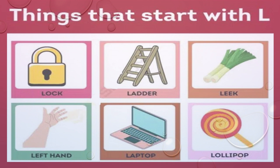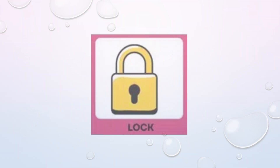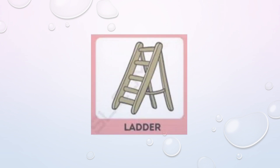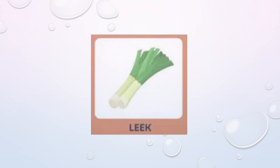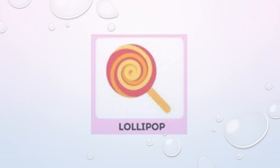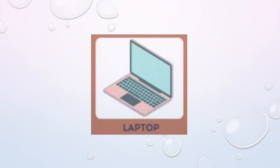Check up. English vocabulary. Things that start with L. Lock. Lock. Ladder. Ladder. Leak. Leak. Leak. Lollipop. Lollipop. Laptop. Laptop.